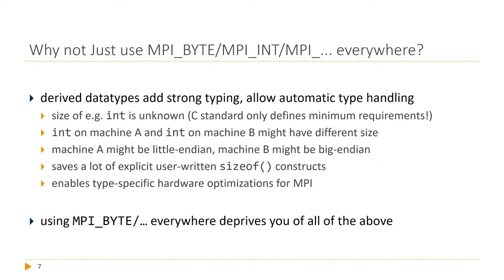Using MPI byte instead of the proper type deprives you of all those features. I'm also a huge fan of readable code — the best comments are the ones you don't have to write because the code is self-explanatory. If I transmit integers and I know my application uses integers for a specific purpose, I can immediately identify what data is being transferred. If I see an MPI float send operation, I know we're probably talking about particle positions — that's information you can encode just by programming correctly.